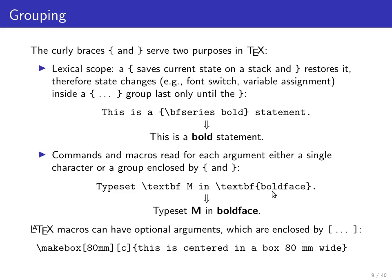LaTeX also has an extended macro mechanism that understands optional arguments, which are enclosed in square brackets. For example, the \makebox command puts text into a horizontal box — a TeX internal data structure of something already formatted that will not be line-broken further. You can optionally specify that the box should have a width, say 80 millimeters, and that shorter text should be centered inside the box. These optional specifications appear in square brackets.